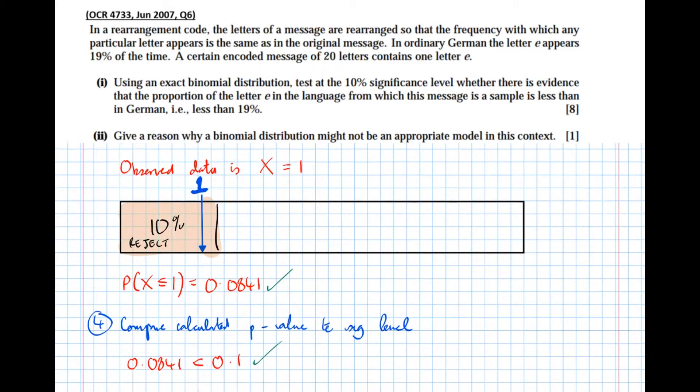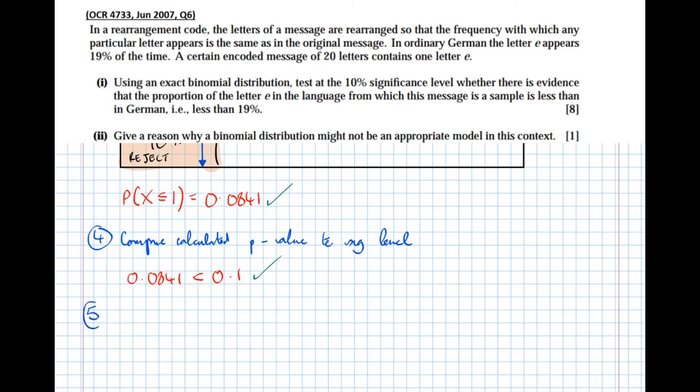And finally step five, conclude in context. So if it's in the rejection region we are going to reject H0. If we found our observed value not to be in the rejection region cumulatively then we'd write do not reject H0. Everything has to be written in terms of H0, it's H0 that's on trial. And now that we've rejected H0 we can do a further in-context conclusion.